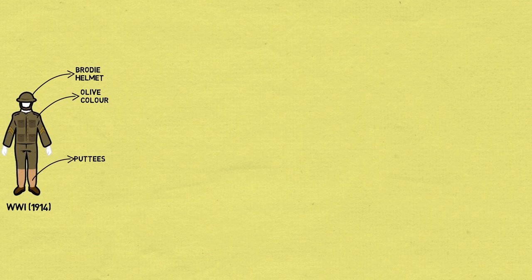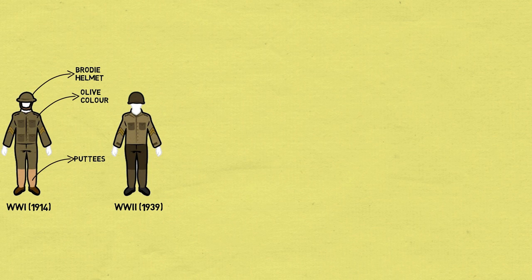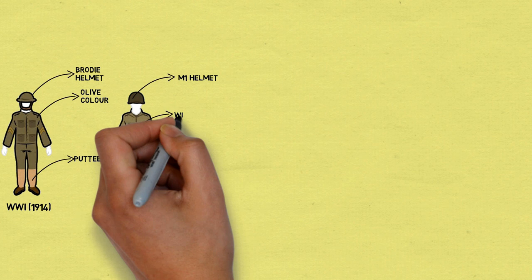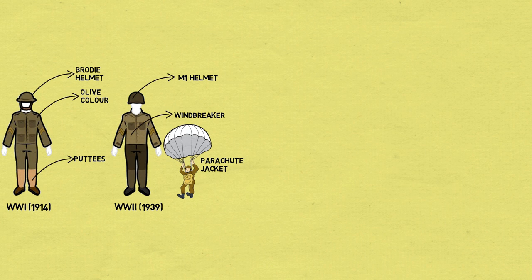World War II 1939: World War II saw similar uniforms, although the Brody helmet was replaced with the M1 helmet. A light windbreaker was also developed to replace the Army's wool jacket. Specialized uniforms were also introduced, such as parachute jumper coats.